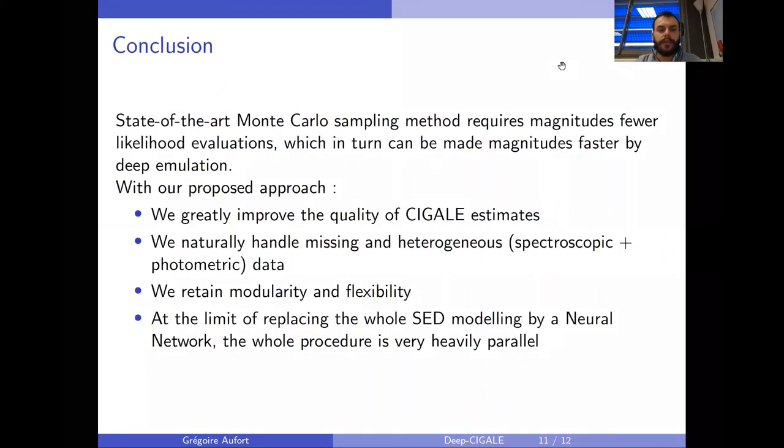To conclude, we developed a state-of-the-art Monte Carlo sampling method in the tempered adaptive multiple importance sampling scheme, which requires magnitudes fewer likelihood evaluations than naive importance sampling and is very robust to a bad prior distribution as a proposal.